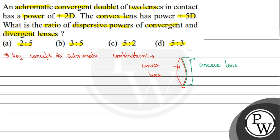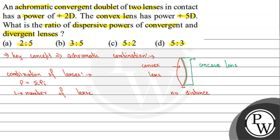When we attach the convex and concave lenses together, there is no distance between them — they are attached directly. The concept we apply is combination of lenses. If we denote the total power as capital P, then P equals the sum of individual powers — that is, P = P1 + P2.